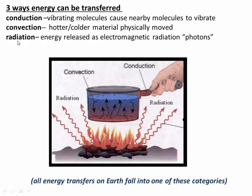The third way is radiation — that's when a hot object emits electromagnetic radiation or photons, and those photons can be absorbed by neighboring materials. An example is standing by a hot fire: photons coming off that fire hit your body, get absorbed, and warm you by radiation.